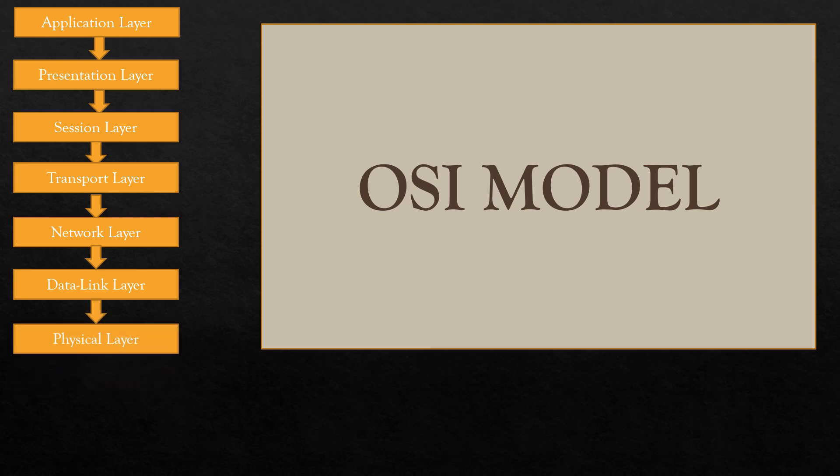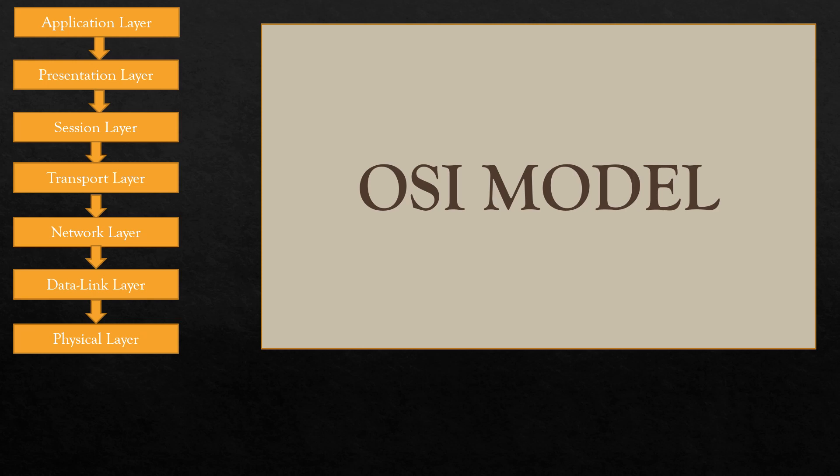The physical layer is the layer on which the real transmission of data bits takes place through a medium. As the name suggests, this is all the physical stuff — wires and connectors — that connects the computers together. Data is transmitted in bits, 0s and 1s.